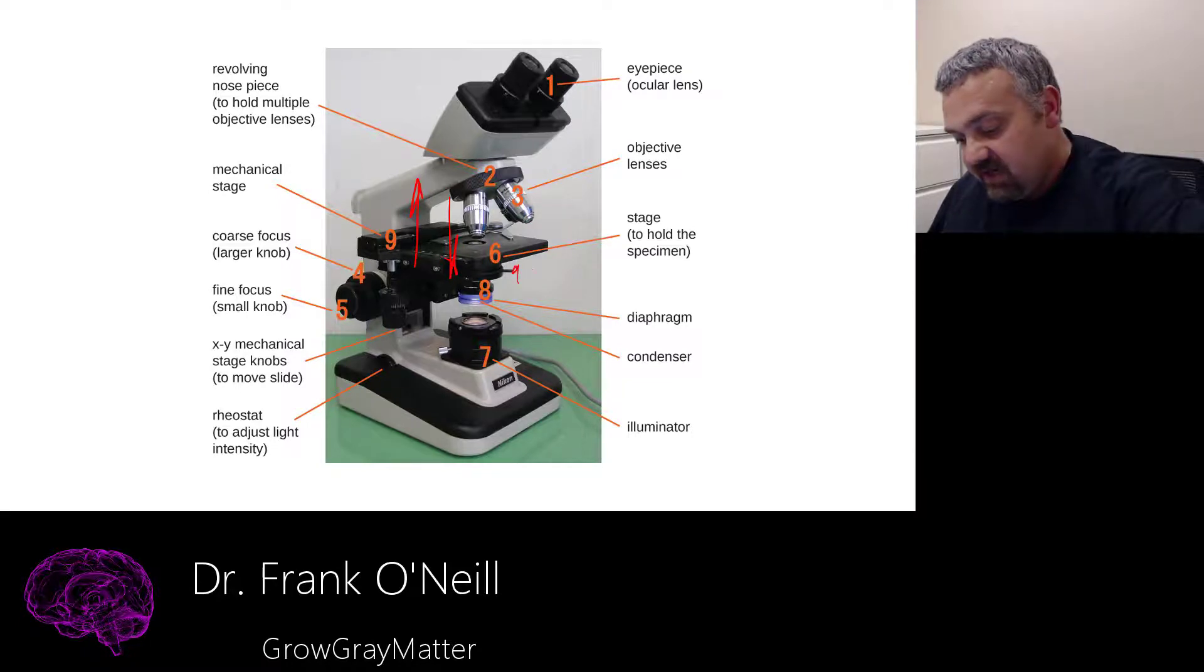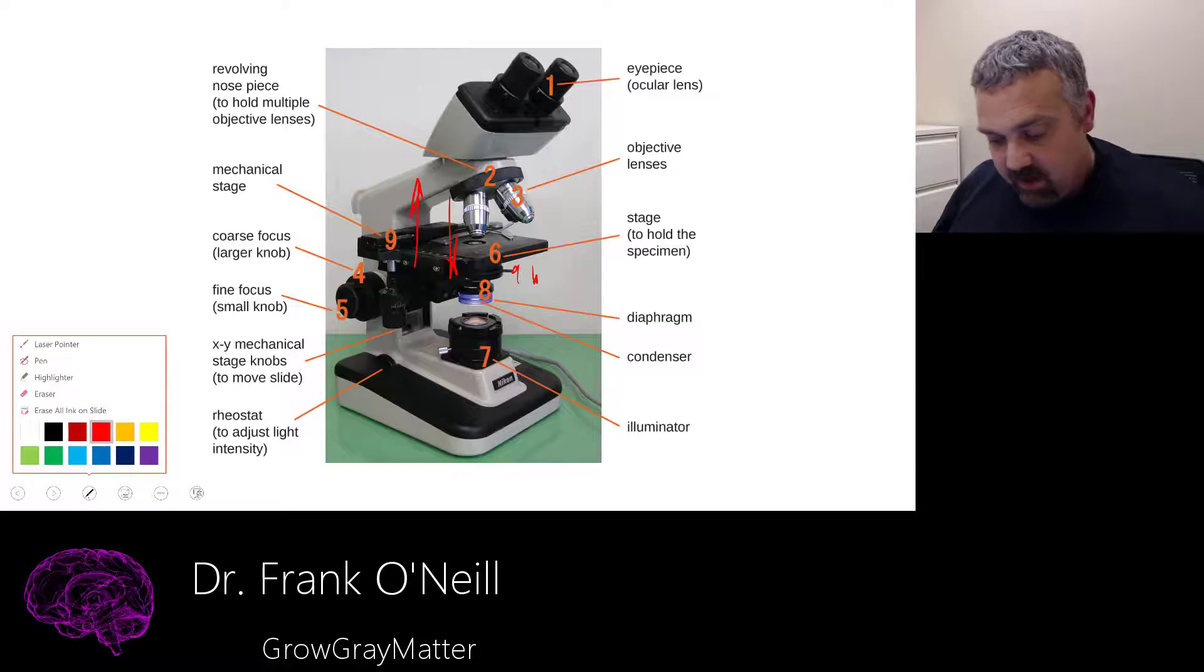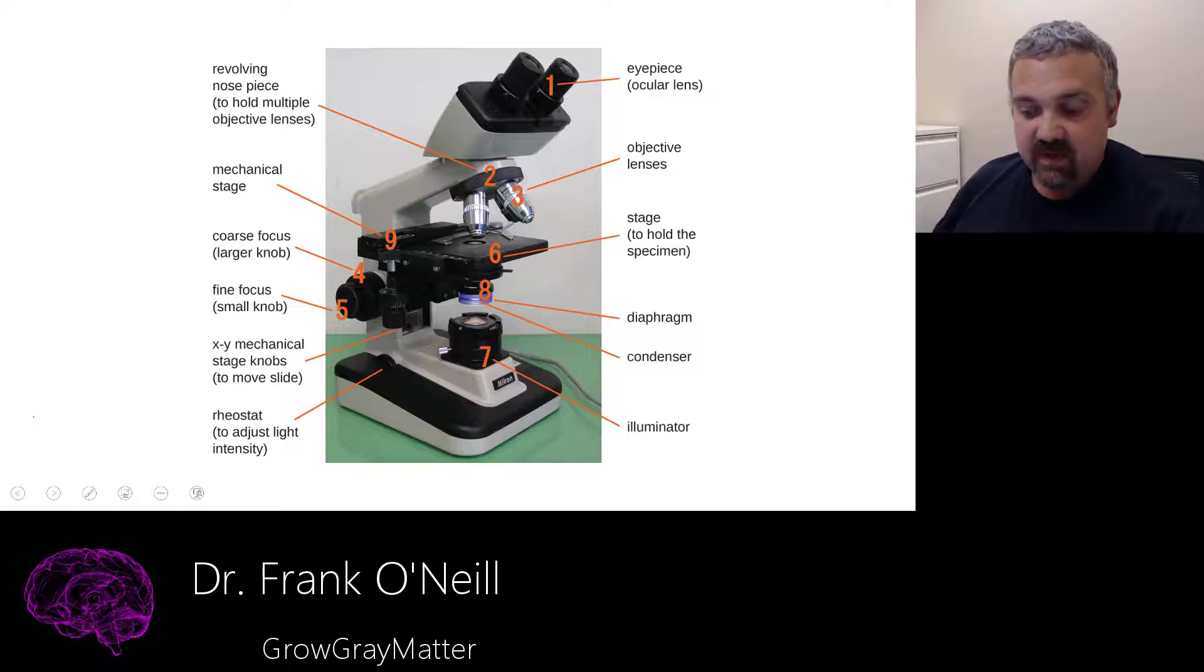And when you turn the fine knob, it's going to move just incrementally, tiny, tiny bits. So that's the coarse versus the fine knob. Both are very important. The coarse knob will get you in the right ballpark. And the fine knob will actually be where you do your focusing.